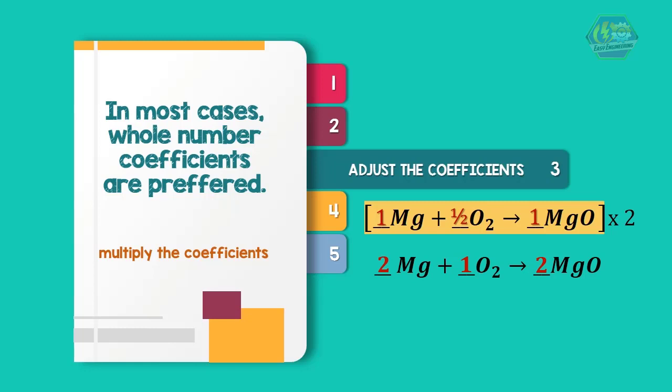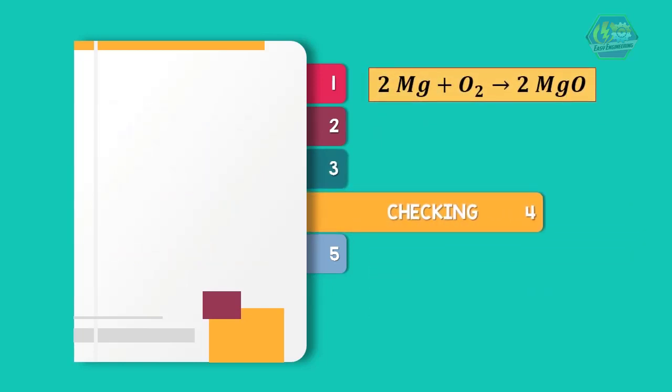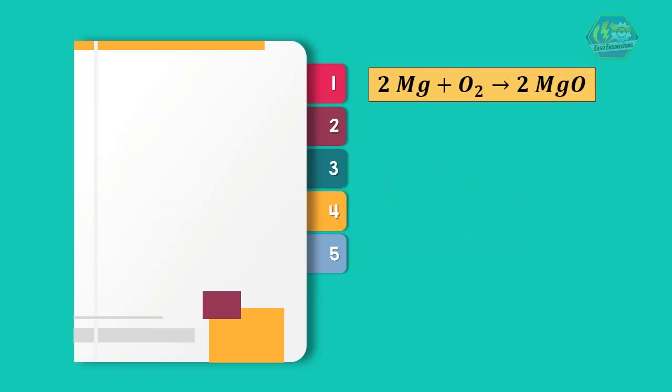Step 4: Checking. After balancing, always check that the equation is balanced. For the left side: Mg equals 2 times 1 mole of Mg equals 2, and O equals 1 times 2 moles of O equals 2. For the right side: Mg equals 2 times 1 mole of Mg equals 2, and O equals 2 times 1 mole of O equals 2.